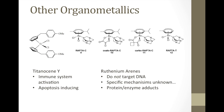Briefly, let's look at some other organometallics. Titanocene Y is known to activate the immune system — which is beneficial given that many cancer patients have suppressed immune systems — and it is also known to induce apoptosis, both great characteristics for an anti-cancer drug. We also have ruthenium arenes, which are ruthenium half-sandwich compounds. These do not target DNA but instead target specific proteins and enzyme adducts; however, the specific mechanism of activation is unknown.